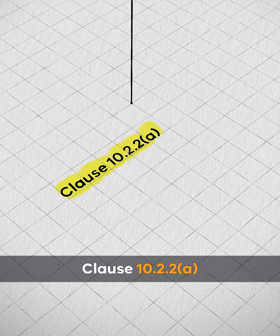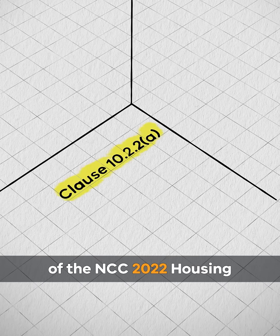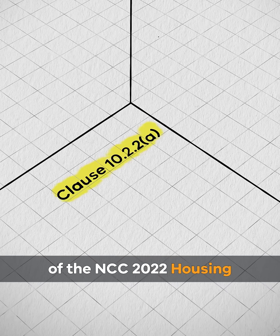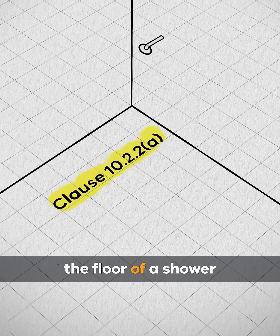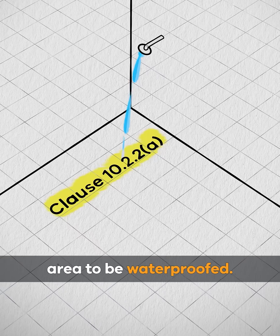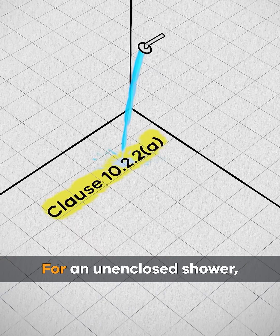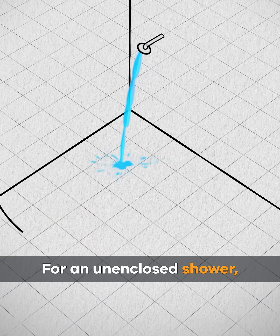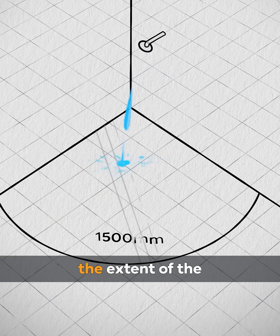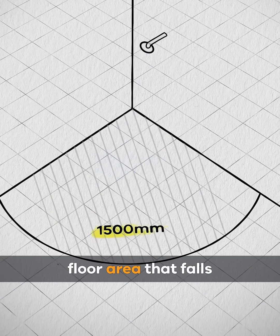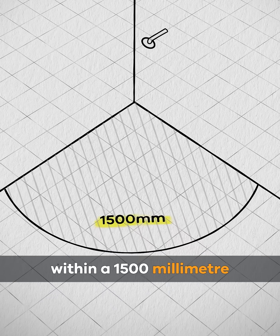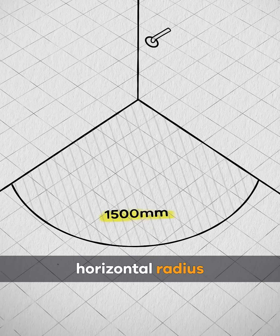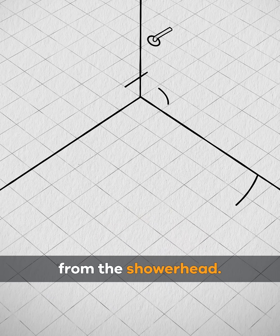Clause 10.2.2a of the NCC 2022 housing provisions requires the floor of a shower area to be waterproofed. For an unenclosed shower, the shower area is the extent of the floor area that falls within a 1500mm horizontal radius from the shower head.